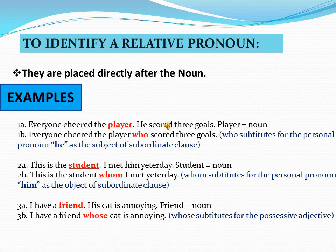Sentence 3A: 'I have a friend. His cat is annoying.' In this sentence, 'friend' is a noun. The combined sentence becomes: 'I have a friend whose cat is annoying.' Here, 'whose' substitutes for the possessive pronoun 'his,' indicating possession.